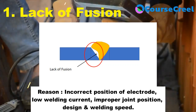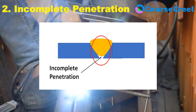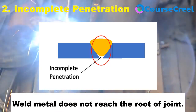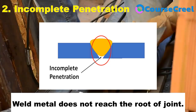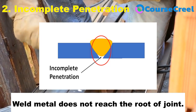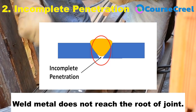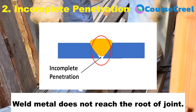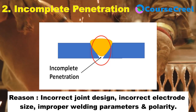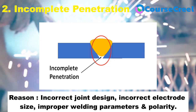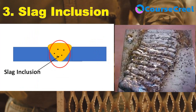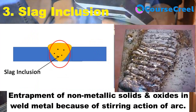The next type of welding defect is incomplete penetration. When weld metal does not reach the root of the joint — the bottommost point of the welding joint — that is considered incomplete penetration. To avoid this defect, the weld metal should completely reach and fill the root of the joint. It can occur because of incorrect joint design, incorrect electrode size, improper welding parameters, and improper polarity.